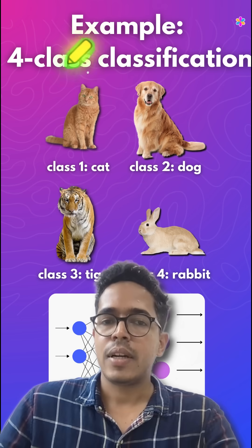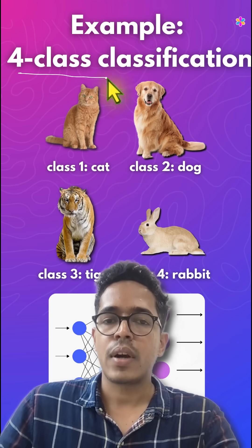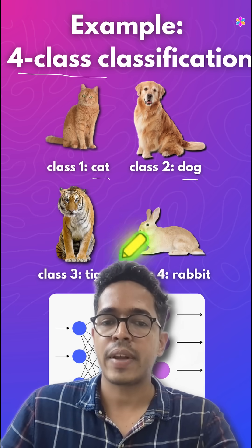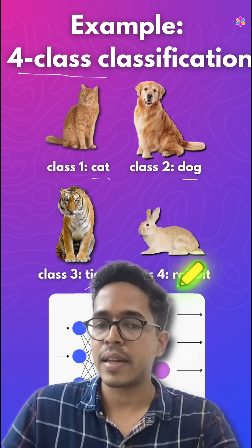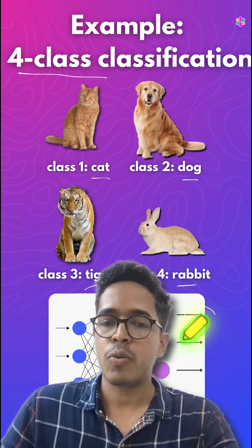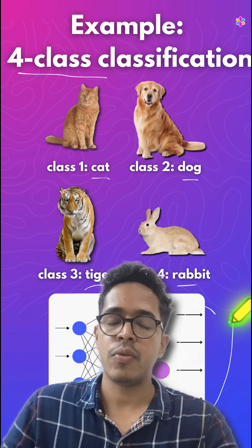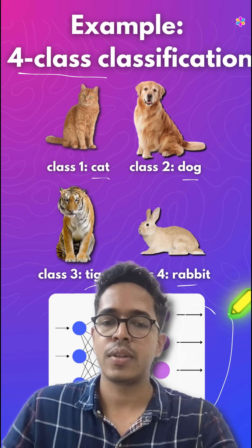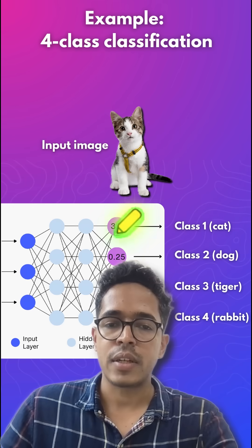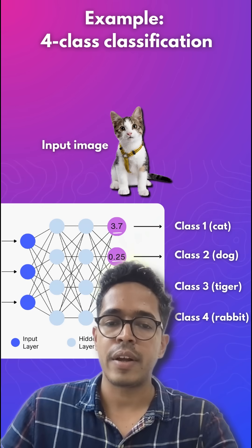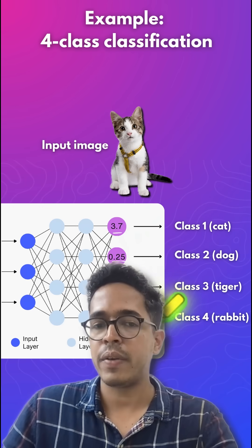Let's try to understand softmax with a four-class classification example where we are classifying images of cats, dogs, tigers, and rabbits. At the output of the neural network you will have four values. Let's say these values are 3.7, 0.25, 1.1, and 0.18.